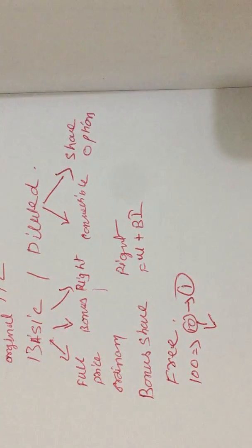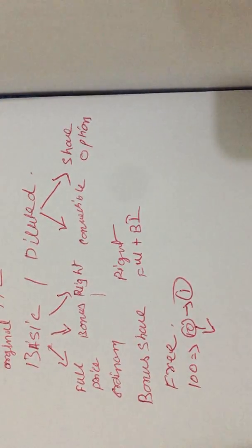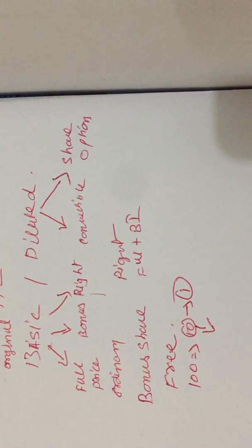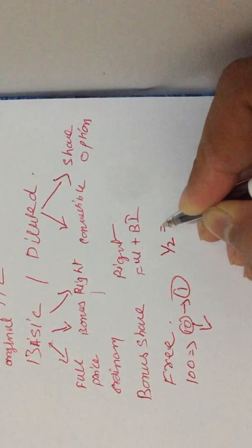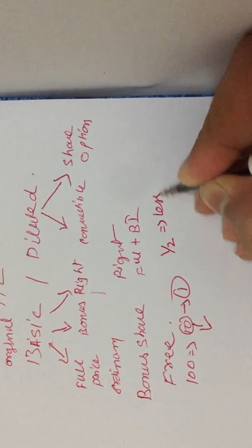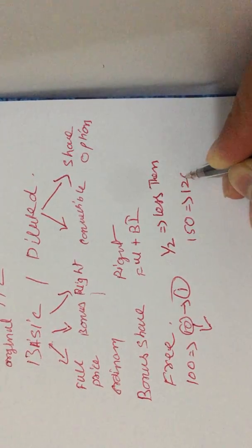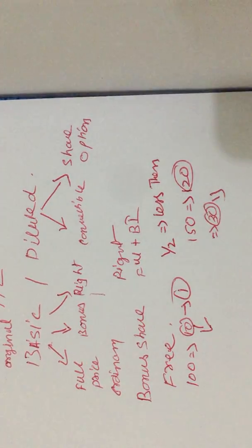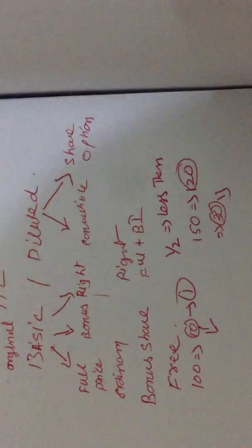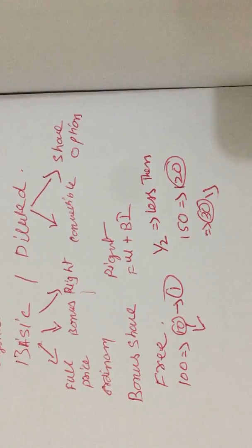Rights shares are a combination of full price and bonus. Full price means you go to the market, see the market rate — say $10 — and purchase at that price. Rights shares are offered at a lower price than the market rate. For example, if the market price is $150, the company offers them to existing shareholders at $120, giving a $30 discount. Those are called rights shares.